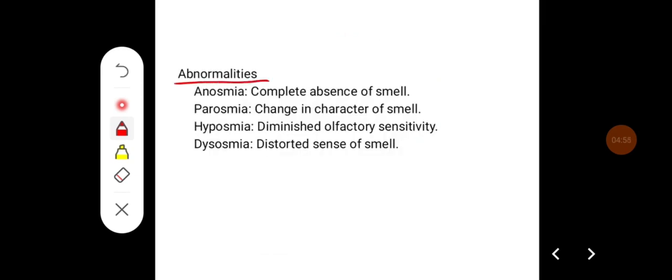Some of the abnormalities related to olfaction are anosmia, which is complete absence of smell, parosmia is change in the character of smell, hyposmia is diminished olfactory sensitivity and dysosmia is distorted sense of smell.